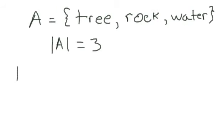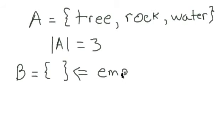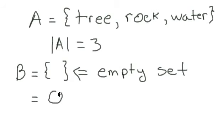What happens if there's nothing in the set? We can have a set with nothing in it — this is known as the empty set. We can also represent it with a symbol that looks like a zero with a diagonal line through it.